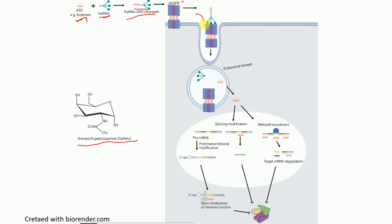After binding to the ASGPR receptor, the GalNAc-conjugated antisense oligonucleotide gets internalized and is taken up by the endosome. Inside the endosome, GalNAc dissociates from the antisense oligonucleotide. Then endosomal escape occurs, the mechanism of which is still poorly understood, releasing the antisense oligonucleotide into the cytoplasm.